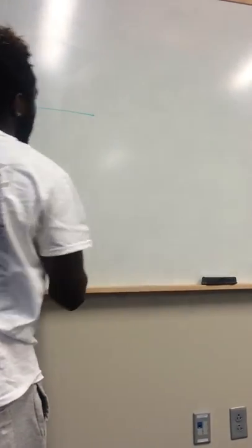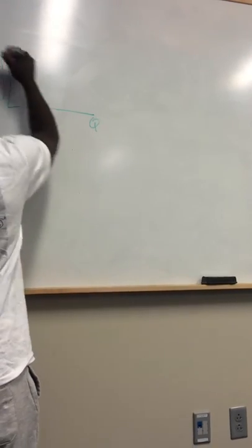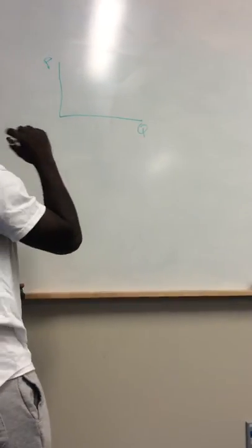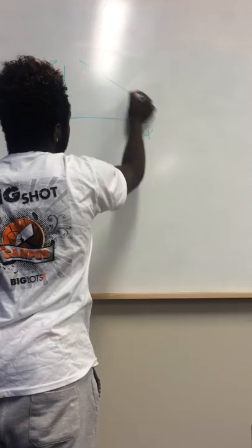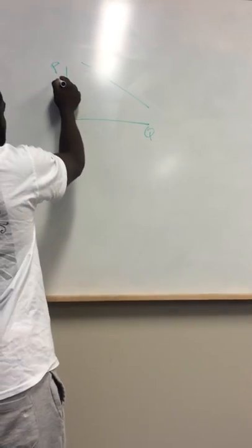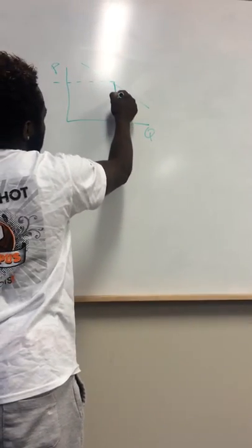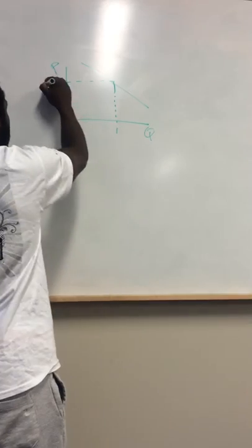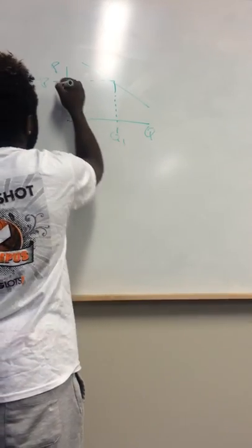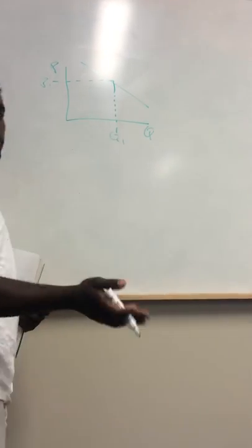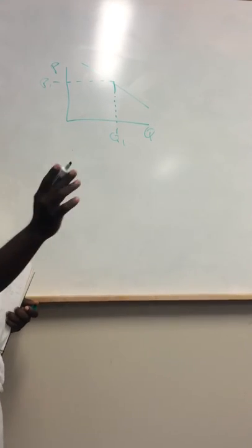So you just draw a regular graph. And this is your quantity and price, as you all know. If I'm going to draw the graph here, price one, this here, price one.